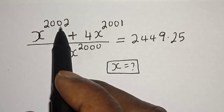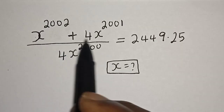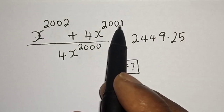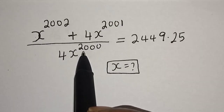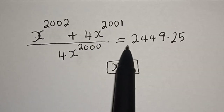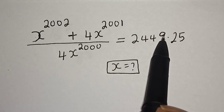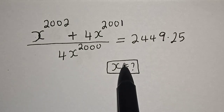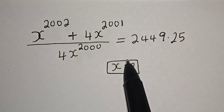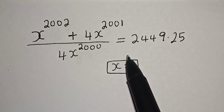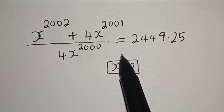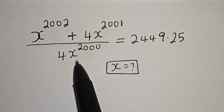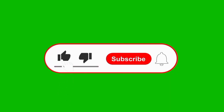x raised to power 2002 plus 4s raised to power 2001, divided by 4s raised to power 2000, is equal to 2449.25. What is the value of x? Hi everyone, welcome to my class. In this class I want to find the value of s from this given equation. Please don't forget to like, share, comment and subscribe. Solution.